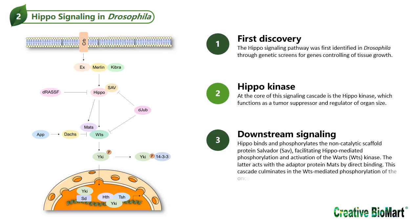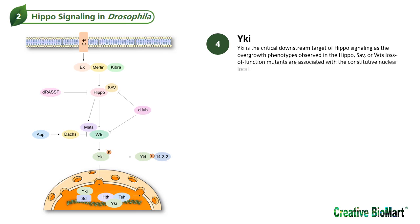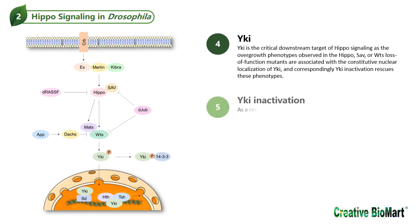This cascade culminates in the WTS-mediated phosphorylation of the oncogenic transcriptional coactivator Yorkie. Yorkie is the critical downstream target of Hippo signaling, as the overgrowth phenotypes observed in the Hippo, SAV, or WTS loss-of-function mutants are associated with the constitutive nuclear localization of Yorkie, and correspondingly Yorkie inactivation rescues these phenotypes.